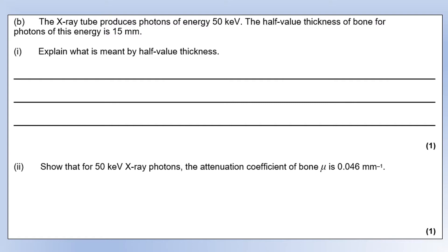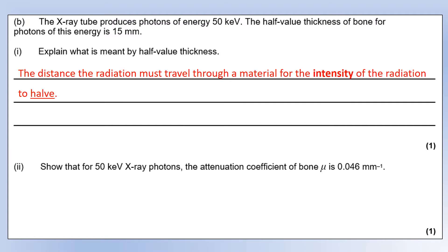An x-ray tube produces photons of energy 50 kiloelectron volts, and the half-value thickness for bone is 15 millimeters. Half-value thickness is very strongly paralleled with half-life in radioactivity — it's the distance radiation must travel through a material for the intensity to halve. Note: it's the intensity (power per unit area) that halves, not the energy. To find the attenuation coefficient of 0.046 mm⁻¹, we calculate ln(2) divided by the half-value thickness in millimeters.